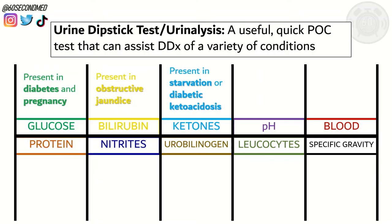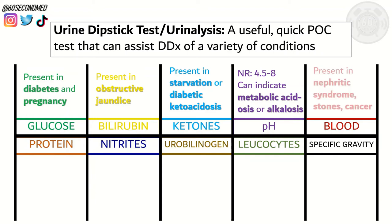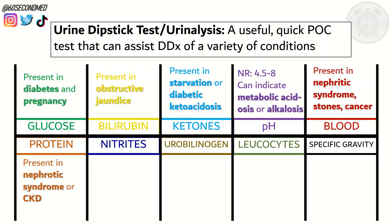The normal pH of urine is 4.5 to 8; being outside this range can indicate metabolic acidosis or alkalosis. The presence of blood in the urine can indicate nephritic syndrome, stones, or cancer.